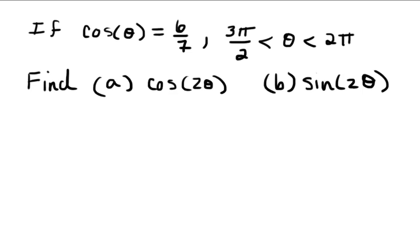Alright, so if cosine of theta is equal to 6 sevenths and theta is between 3 pi over 2 and 2 pi, what is the cosine of 2 theta and what is the sine of 2 theta?